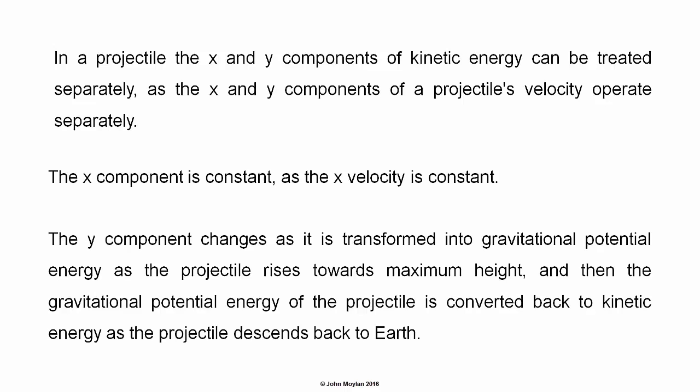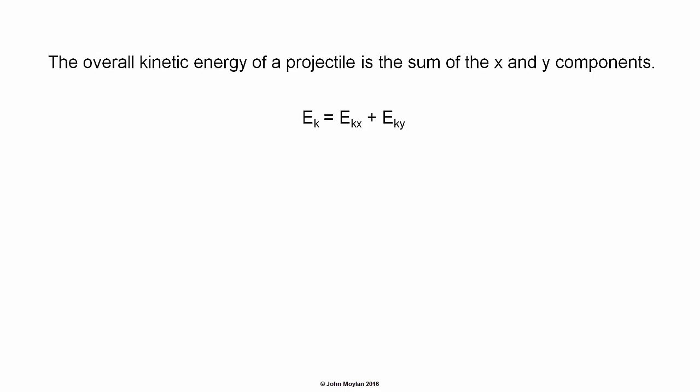The Y component changes as it is transformed into gravitational potential energy, as the projectile rises towards maximum height, and then the gravitational potential energy of the projectile is converted back to kinetic energy as the projectile falls back to Earth. Overall, the kinetic energy of a projectile is the sum of the X and Y components, such that E subscript K equals E subscript KX plus E subscript KY.